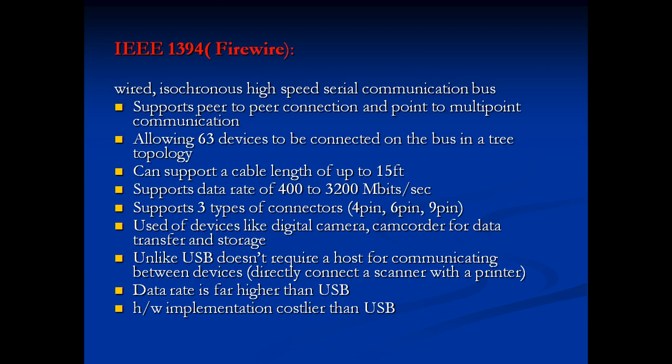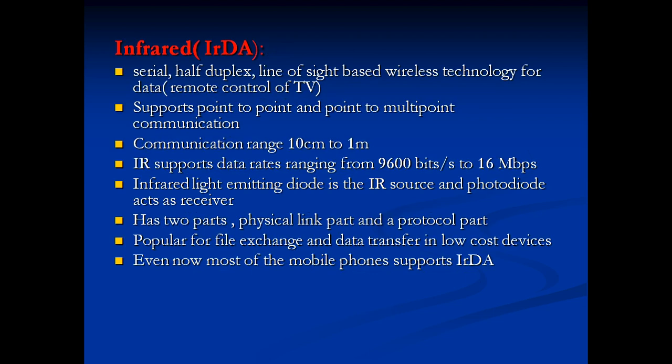Unlike USB, IEEE 1394 does not require any host for communicating between devices — you can connect a scanner directly to a printer. Data rate is much higher than USB. Hardware implementation is costlier than USB. IrDA — Infrared Data Association — is a serial half-duplex line-of-sight wireless technology, used for example in TV remote controls. It supports point-to-point and point-to-multipoint communications with a range of 10 cm to 1 meter and data rates from 9600 bps to 16 Mbps.